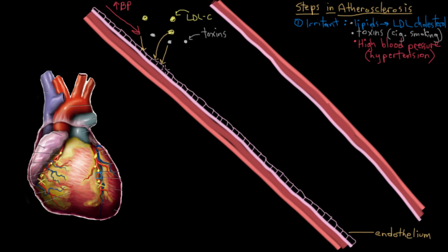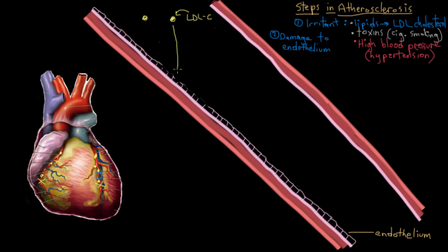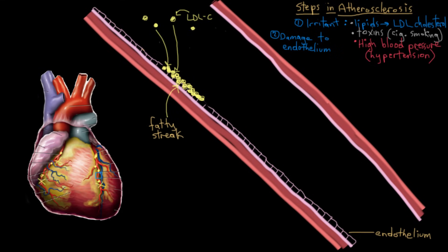Step two is actual damage to the endothelium by the irritant — our barrier has started to break down. And in step three, regardless of whether it was toxins, cholesterol, or high blood pressure that damaged the endothelium, what happens next is that the cholesterol will jump in and start to collect under the damaged endothelium. It's floating around in the blood and when it comes across this damaged endothelium, it joins up. When it builds up to this flattened extent, it's known as a fatty streak.